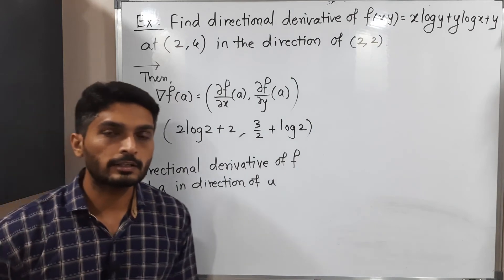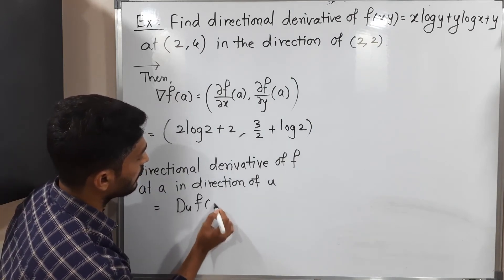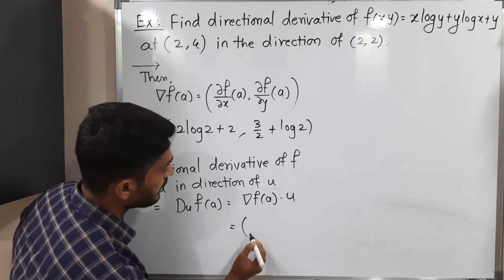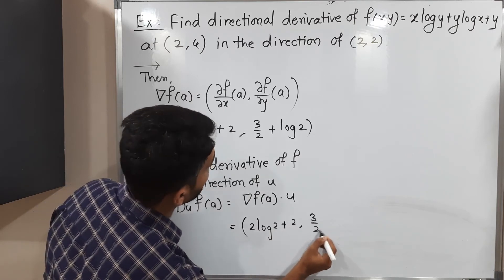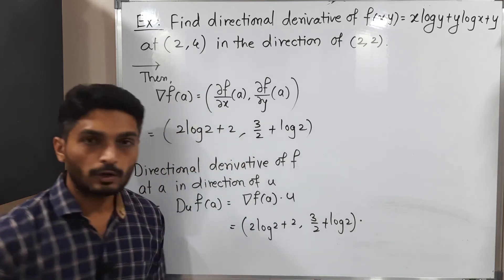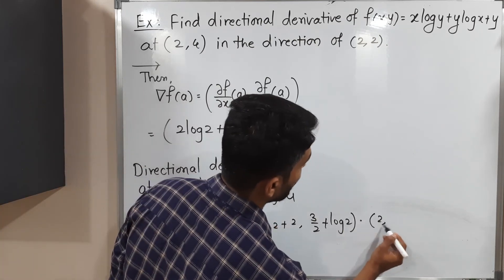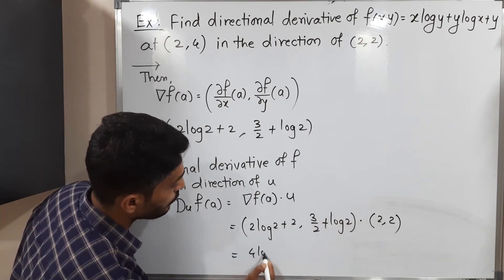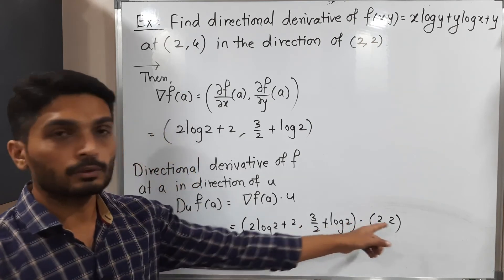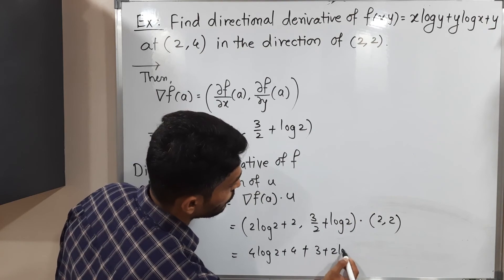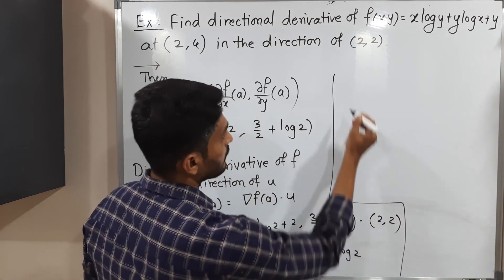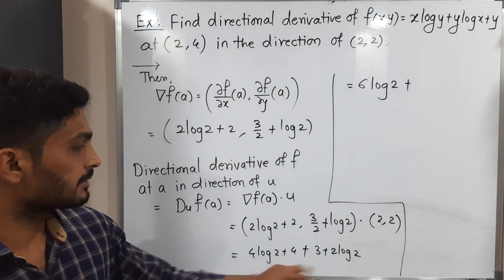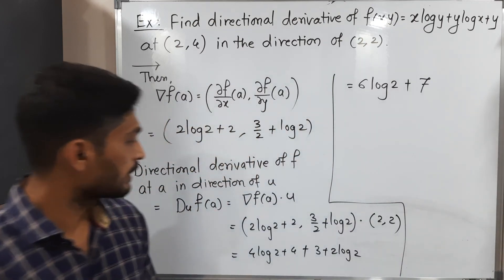The directional derivative D_u f(a) = ∇f(a) · u. We have ∇f(a) = (2·log(2)+2, 3/2+log(2)) and u = (2,2). Computing the dot product: first components: 2·(2·log(2)+2) = 4·log(2)+4; second components: 2·(3/2+log(2)) = 3+2·log(2). Adding: 4·log(2) + 2·log(2) + 4 + 3 = 6·log(2) + 7. So the required answer is 6·log(2) + 7.